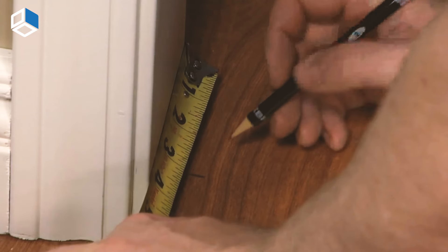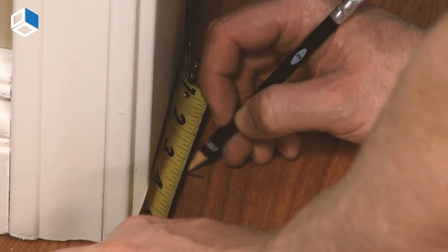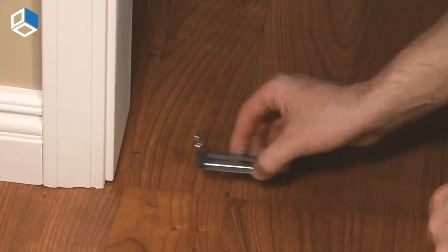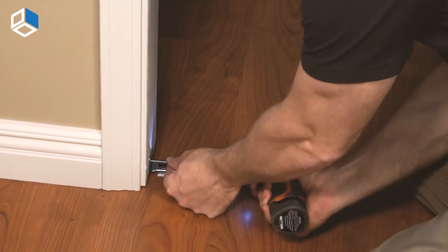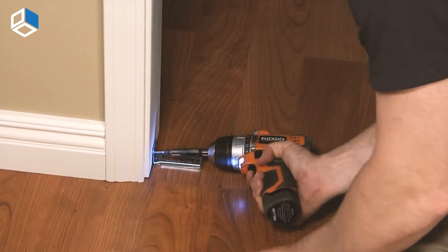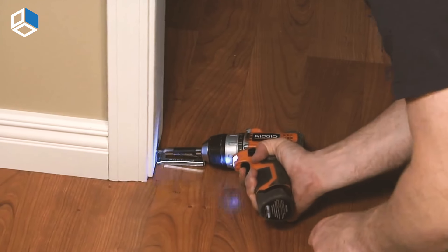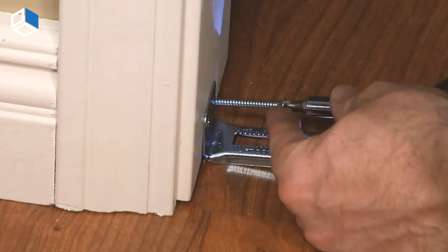Measure the base of the jamb to determine the placement of the jamb bracket. This should be in line with the measurements made for installing the top track. Drill pilot holes, then install the jamb bracket with the screws provided.